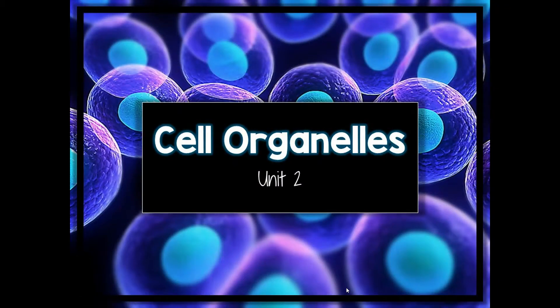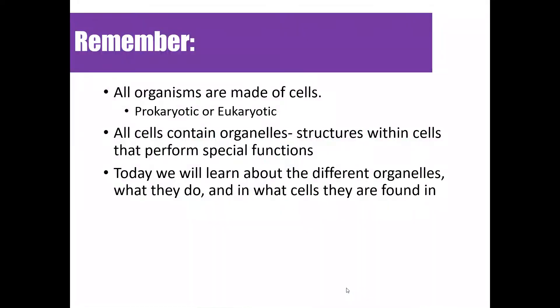Welcome back, biology students. We're still in unit two, talking about the cell. In the last lesson we learned the cell theory, which states that all living things are made of cells, cells are the basic unit of life, and all cells come from pre-existing cells. Those ideas came from discoveries made by several influential scientists who utilized the microscope. We also mentioned that cells can be classified as prokaryotes or eukaryotes.